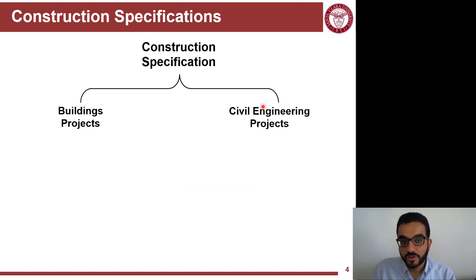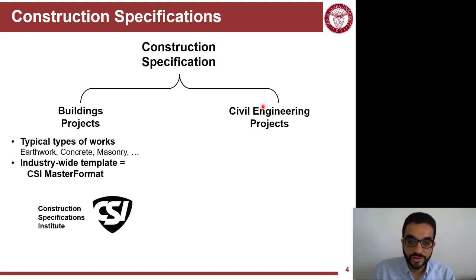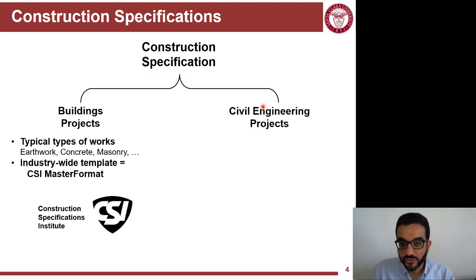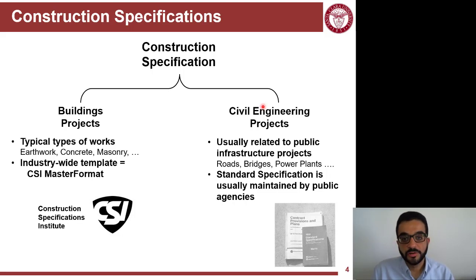Construction specifications are organized in different ways depending on what type of project you're dealing with. For building projects, they follow a standard outline following the CSI Master Format. But for civil engineering projects like roads, dams, or water districts, those agencies or departments have their own standard specifications and follow their own way of structuring them.